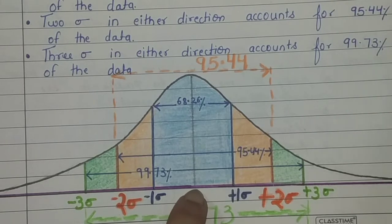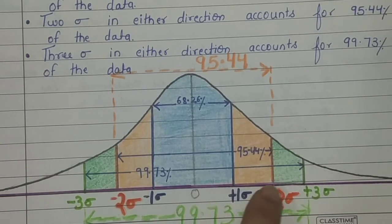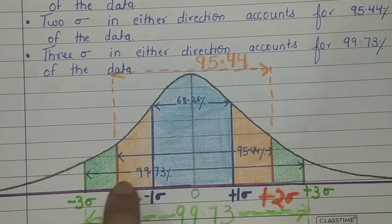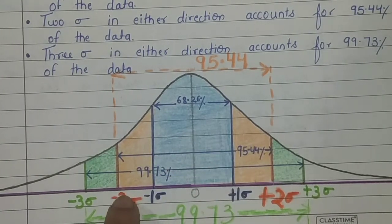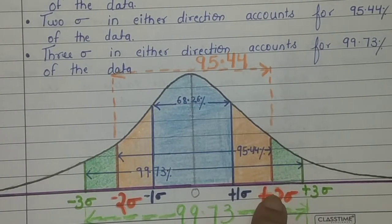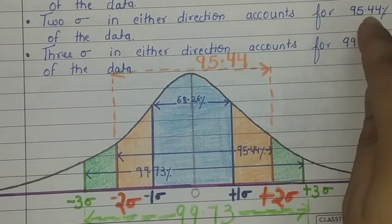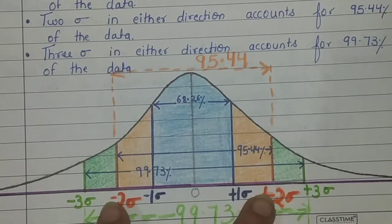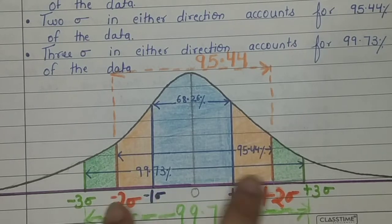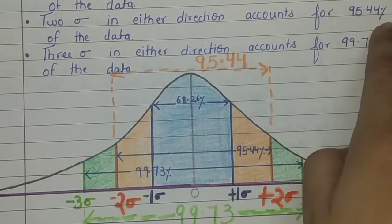If we go two standard deviations in both directions from the center — that is, from minus two standard deviations to plus two standard deviations — the total area covered will be 95.44% of the data. It accounts for the data in either direction; going twice in both directions gives 95.44% of the whole data.